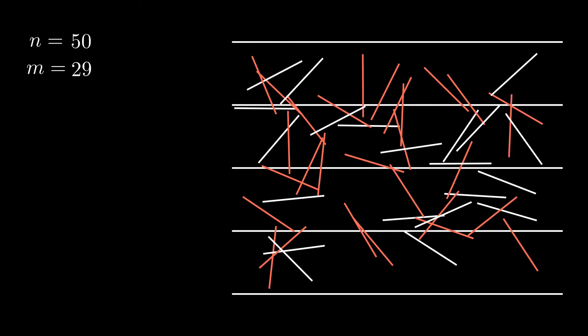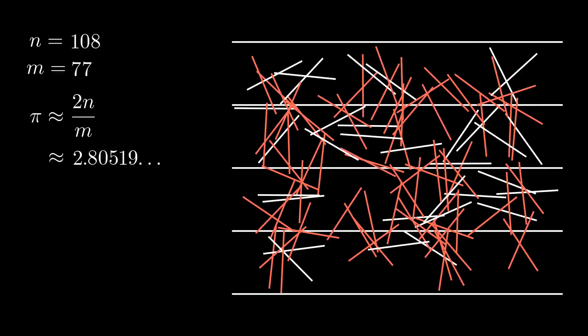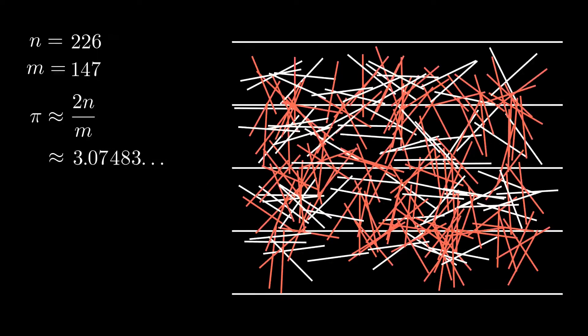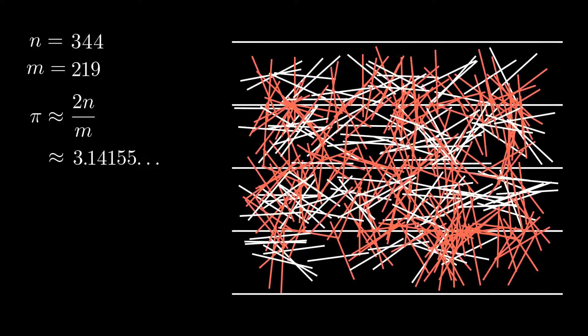Now, if we multiply the total number of needles by 2 and divide it by the number of needles that intersect a line, we should get a rough approximation of pi. And as the number of needles dropped approaches infinity, this rough approximation should converge exactly to pi.